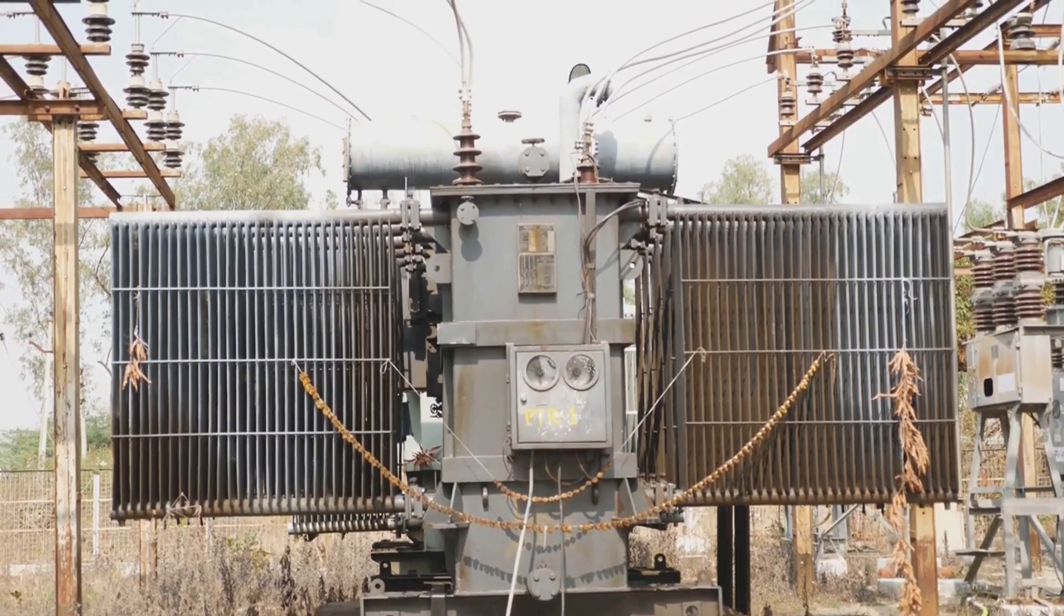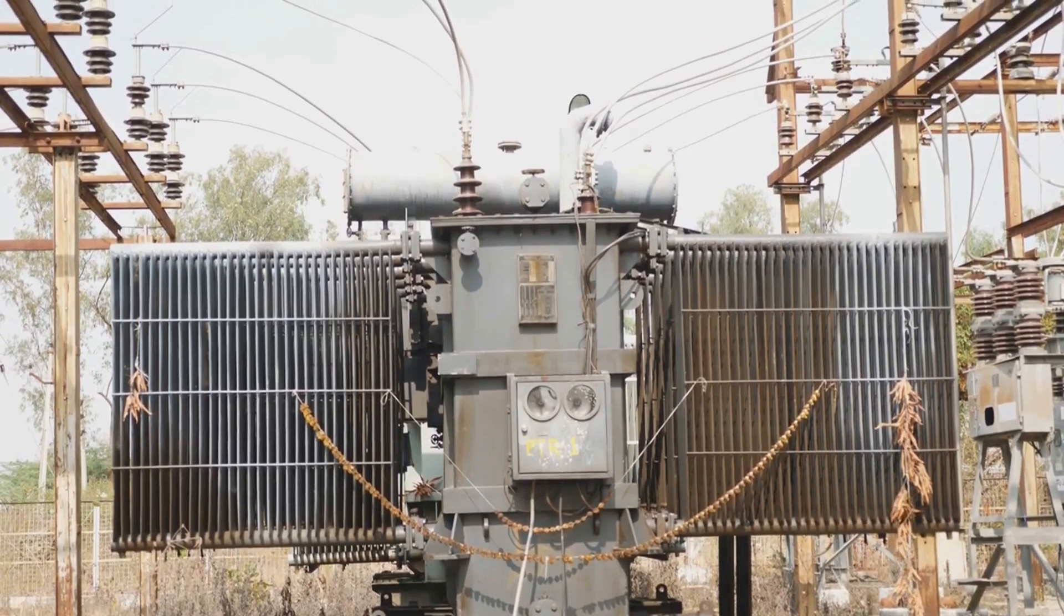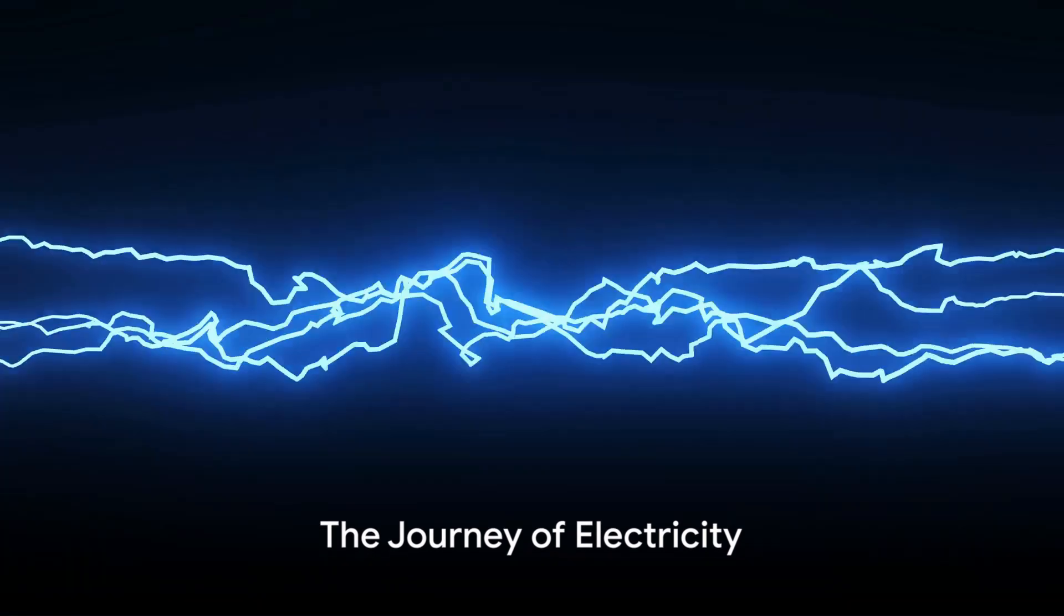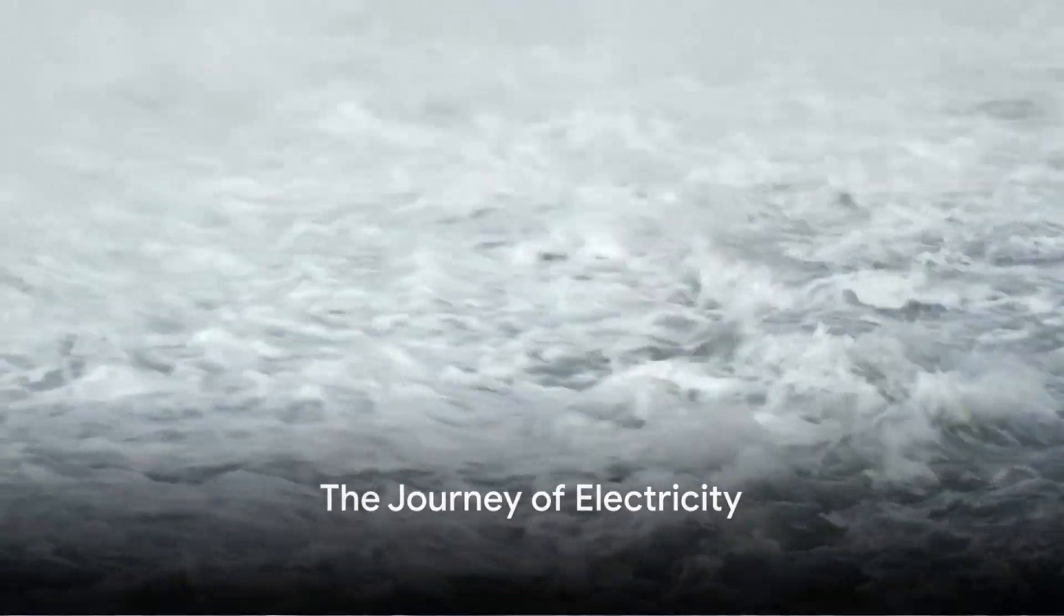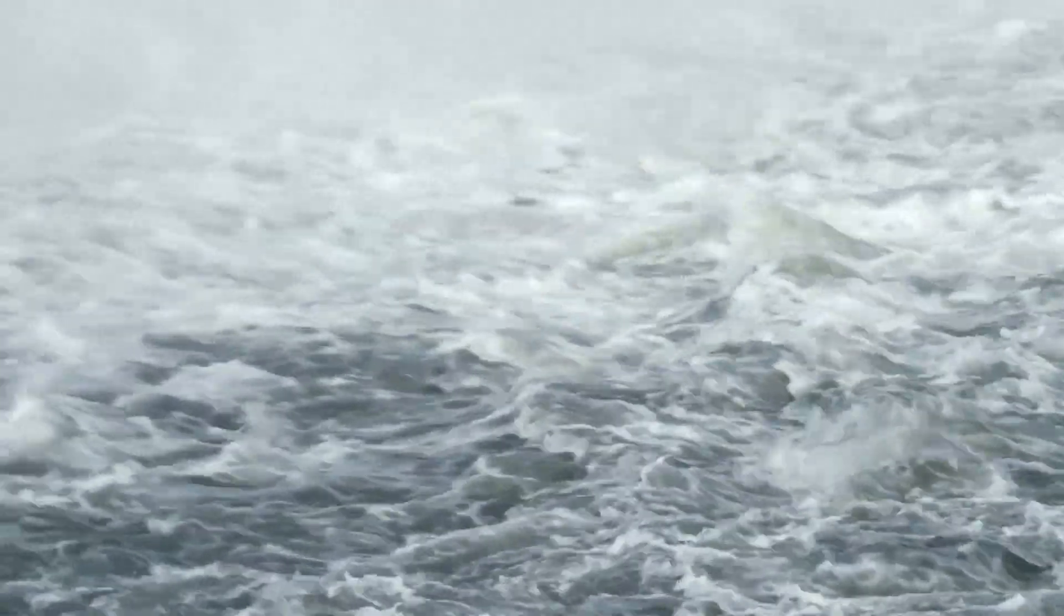The journey of electricity through these components is a fascinating process. Imagine the electricity as a river. It starts its journey as alternating current or AC power, which is like a turbulent, fast-flowing river.